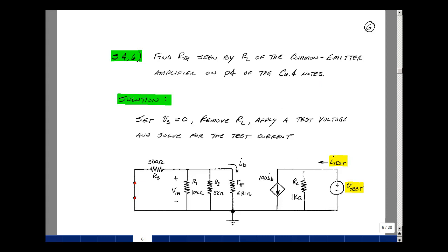To find the Thevenin resistance, we set all the independent sources equal to zero. In this case, there was a voltage source V-sub-S on the left-hand side of that equivalent circuit. Replace that by a short circuit.